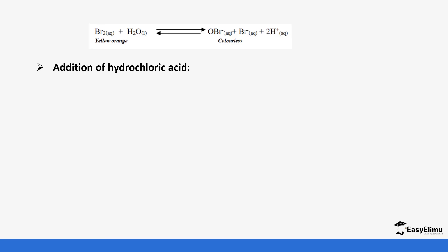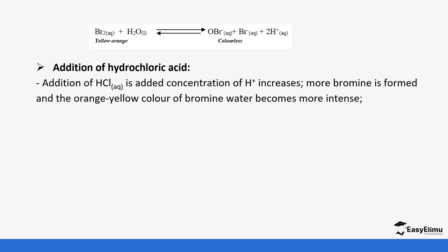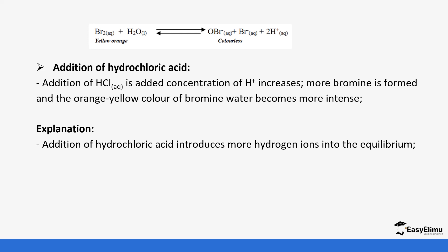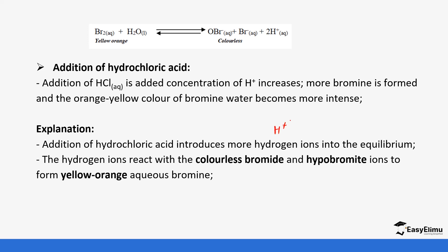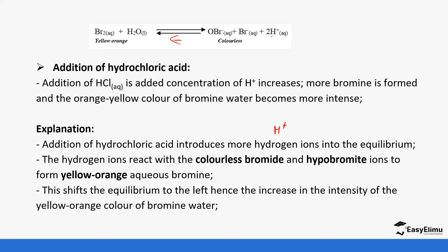Now let's look at the addition of an acid. If we add an acid, the concentration of hydrogen ions increases, bromine is formed, and the orange-yellow color of bromine water becomes more intense. When we add hydrochloric acid, we are introducing more hydrogen ions into the system. The system will shift such that the excess hydrogen ions need to be removed — the bromide ions react with the hydrogen ions to produce bromine. So the back reaction is favored and the equilibrium shifts to the left, hence the increase in the intensity of the yellow-orange color of the bromine water.